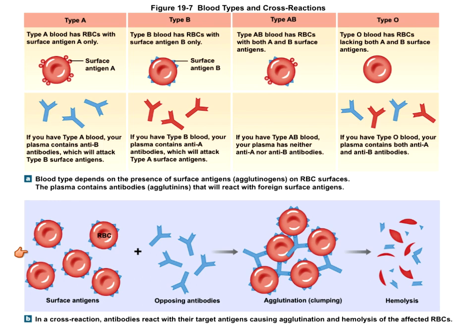If you have a negative blood type, you can only receive another negative blood type. For AB negative patients, they can receive A, B, or O blood, but they want to make sure they're getting the negative blood type. If you are AB positive, you can receive everything — A, B, O positive or negative — because you have that RH antigen present and don't make antibodies against it.